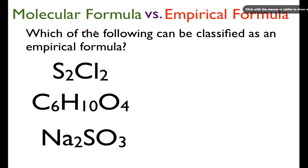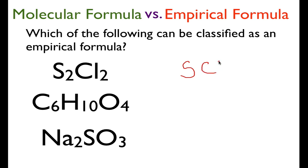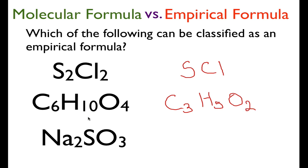The question asks which of the following can be classified as an empirical formula — meaning it has to be at the lowest whole number ratio. We have S₂Cl₂: since both subscripts are 2 and divisible by 2, the empirical formula would just be SCl. So S₂Cl₂ is a molecular formula, not an empirical formula. Next, C₆H₁₀O₄: the subscripts 6, 10, and 4 are all divisible by 2, giving C₃H₅O₂. So that is also a molecular formula, not empirical.